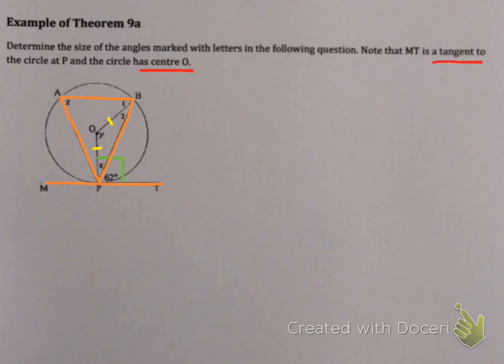I'm also going to draw in my windsurfer angle. My tangent is MT, which forms my board. And my sail of my windsurfer is triangle ABP. That means I'm going to have some angles which are equal according to theorem 9A.